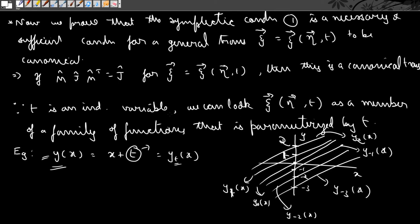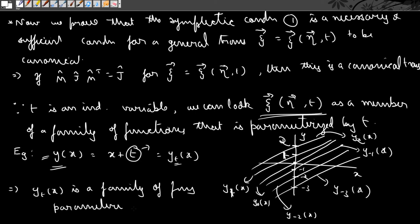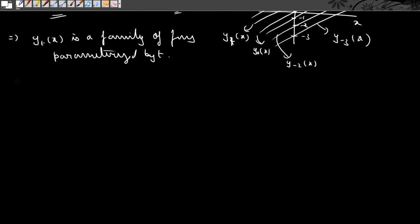There are infinitely many curves depending on the value of t. It is in this sense that we say: since t is independent, we can look at the function psi(eta, t) as a member of a family of functions parameterized by t. By choosing a particular value of t we get the corresponding member of the family.